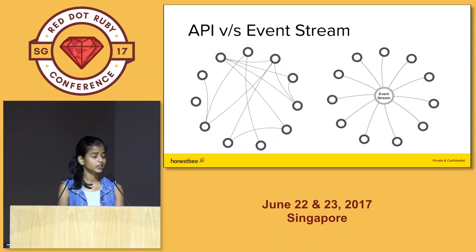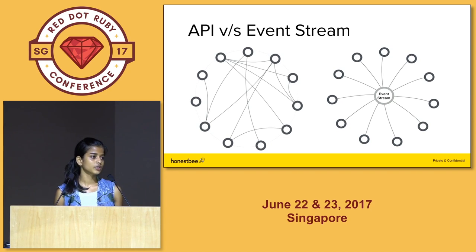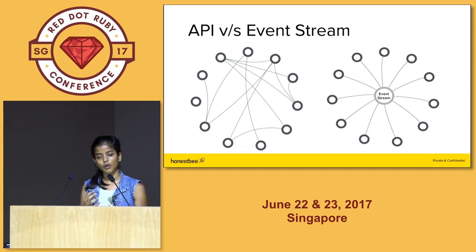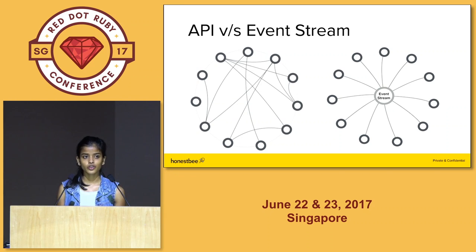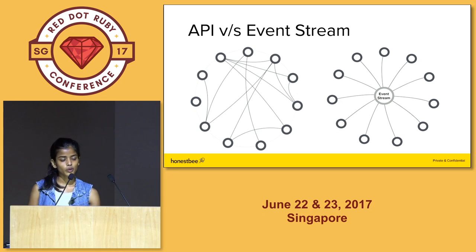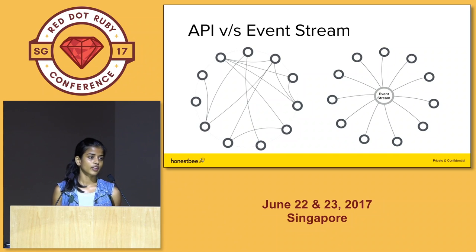I'd first like to show you this diagram. Let's say you decide to split services — you take a big service and start taking out some of the components. There are various ways for these services to talk to each other, and one of the common ways is HTTP. One of the issues with services talking via APIs is that every single service is aware of the concern of the other service.